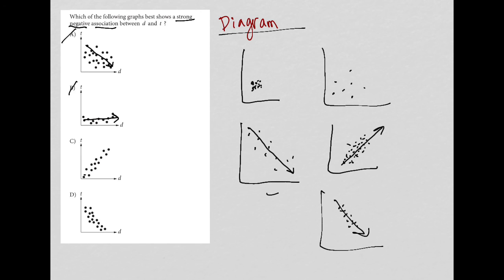Choice C is strong, but it's a positive association. So that's why C is gone.